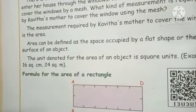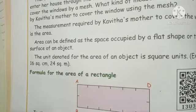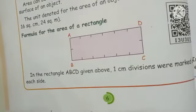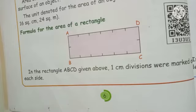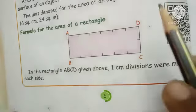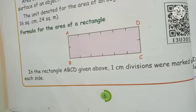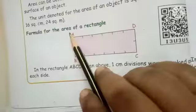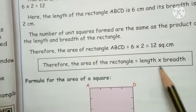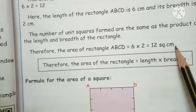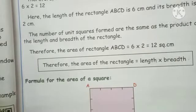Formula for the area of a rectangle: here is a picture of rectangle ABCD. For the perimeter you did 2 multiplied by (length plus breadth), but for area of the rectangle you directly multiply length by breadth. Area of rectangle equals length multiplied by breadth. You write the answer in square centimeter — that is the unit for area of a rectangle.